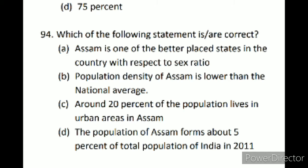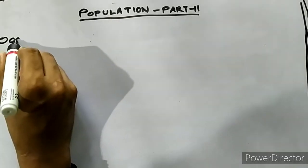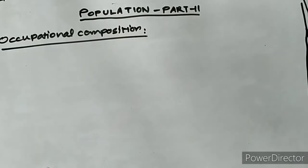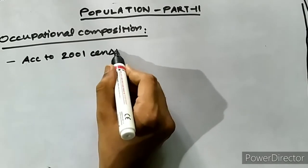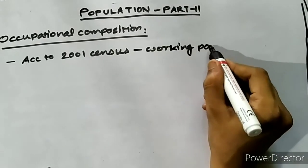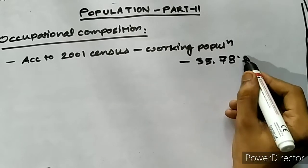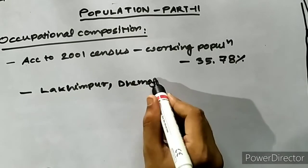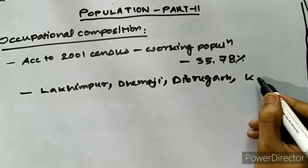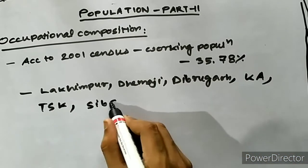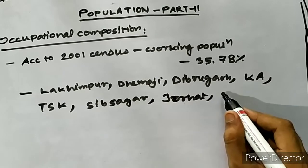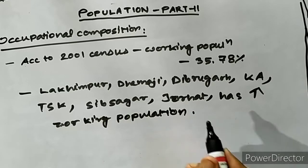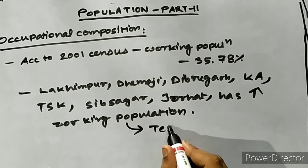Next we will discuss the occupational composition of Assam. The economic conditions of a region can be understood by looking at the proportion of its total population engaged in various economic activities. According to the 2001 census, the working population of the state constitutes 35.78 percent. The districts of Lakhimpur, Dhemaji, Dibrugarh, Karbi Anglong, Tinsukia, Sivsagar, Jorhat, and Golaghat have high working population, possibly because of the presence of tea gardens, except in Dhemaji, Lakhimpur, and Karbi Anglong.